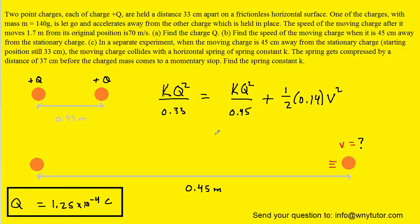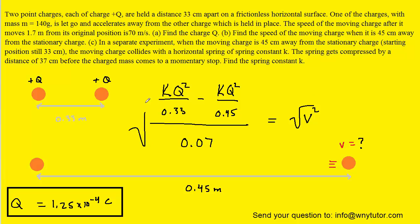To solve for V we subtract the KQ squared over 0.45 term over to the left-hand side. Notice that one-half times 0.14 is 0.07. You could then divide both sides by 0.07, and finally take the square root of both sides. You'd have to carefully plug all that into your calculator to solve for V. You should get roughly 40.3 meters per second for the speed. This is the correct answer to part B.